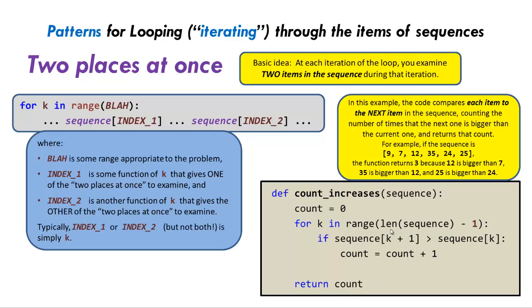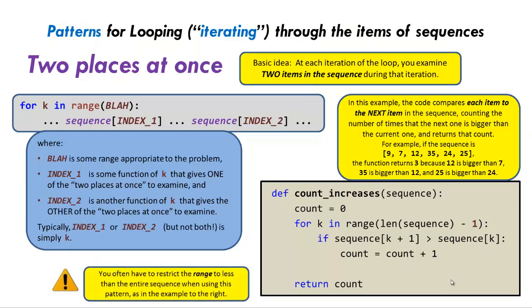Notice that we stopped one short of the length of the sequence because of the k plus 1 — if we didn't do that, we'd go past the edge. It's often the case that you have to restrict the range, as we did here, to make this pattern work.